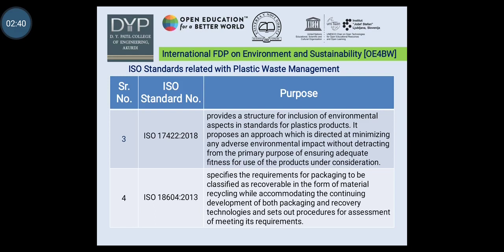ISO 14001-2015 is a systematic framework to manage the immediate and long-term environmental impacts of an organization's products, services and processes. The third standard is ISO 17422-2018, which provides a structure for inclusion of environmental aspects in standards for plastic products. It proposes an approach directed at minimizing adverse environmental impact without detracting from the primary purpose of ensuring adequate fitness for use of the products. The next ISO is ISO 18604-2013, which specifies requirements for packaging to be classified as recoverable in the form of material recycling, while accommodating the continuing development of both packaging and recovery technologies.